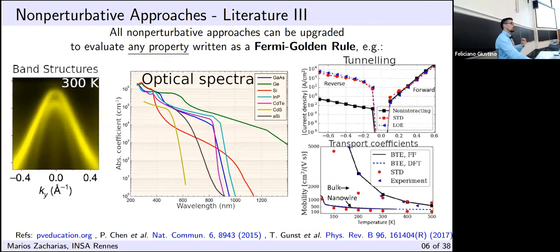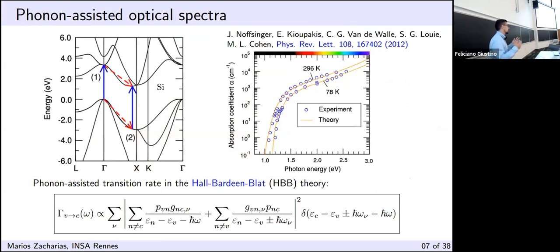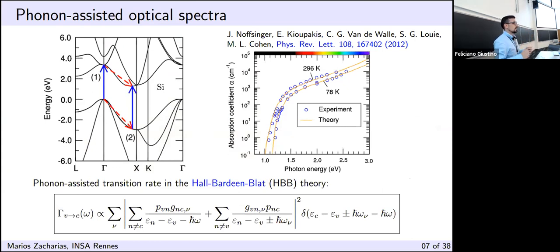All non-perturbative approaches can be used to evaluate essentially any property that can be written as a Fermi Golden Rule. For today's lecture I'll talk more about temperature-dependent band structures and phonon-assisted optical absorption. An electron at the valence band top wants to make an indirect transition in the band structure of silicon to the conduction band bottom, which lies at a different k-point in momentum space. The electron absorbs a photon, makes a direct transition, and then needs to interact with a phonon to complete the indirect transition.